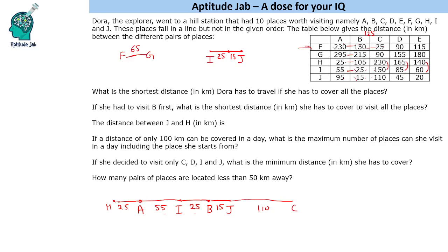Now for C and D: we see 65, 65, 65, 65, 65 — all coming as 65. But we need to decide which side D goes. Comparing D and J, the distance is 45. So D is 65 from C and 45 from J, placing D on this side.